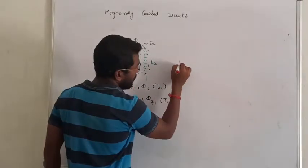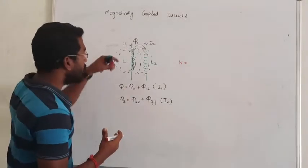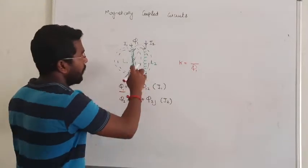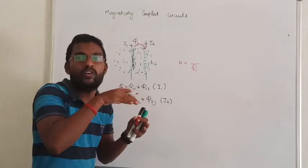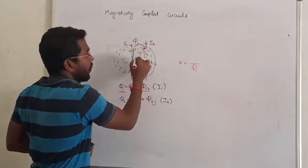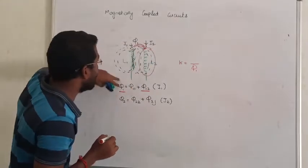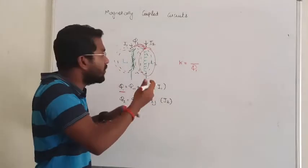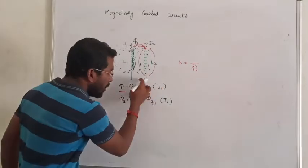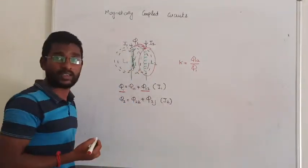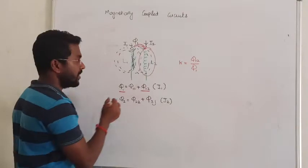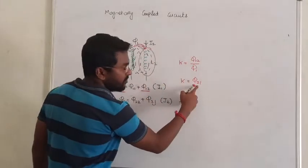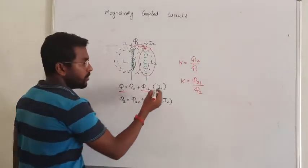Now I am introducing the first term — that is called the coefficient of coupling. In the primary inductor, when current passes, we get total flux φ1. The coefficient of coupling is the amount of flux that is going to be coupled with the secondary coil from the primary coil — that is φ12 — out of the total flux φ1.